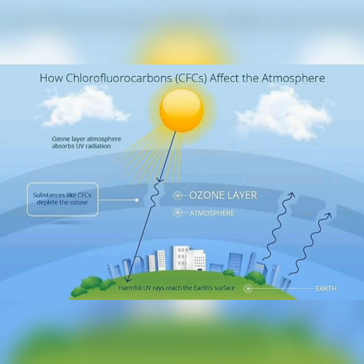Chemicals called chlorofluorocarbons, or CFCs — as you can see in this diagram — are the primary culprit in ozone layer breakdown. A CFC is a molecule that combines the elements carbon, chlorine, and fluorine.